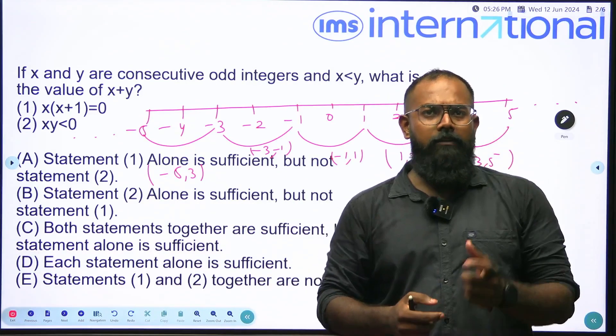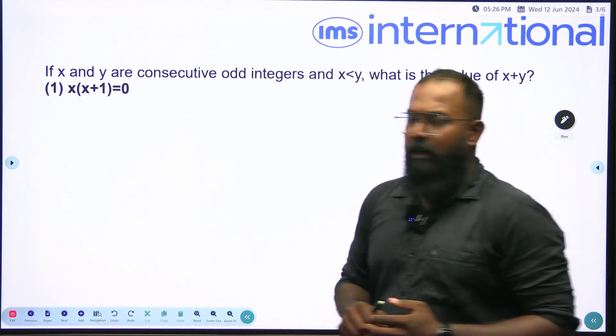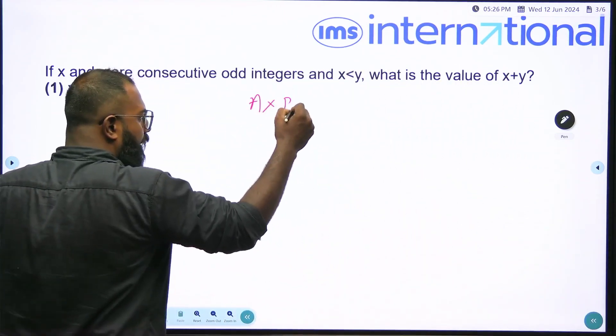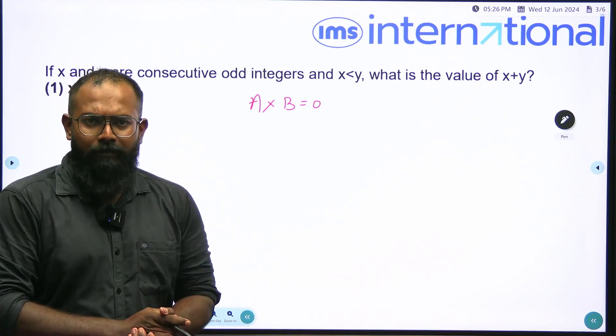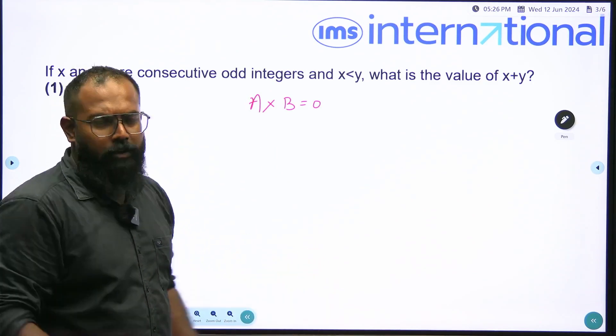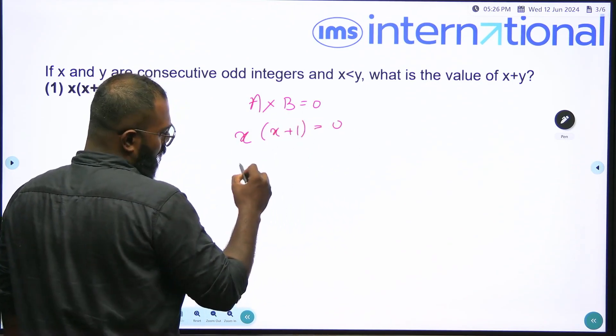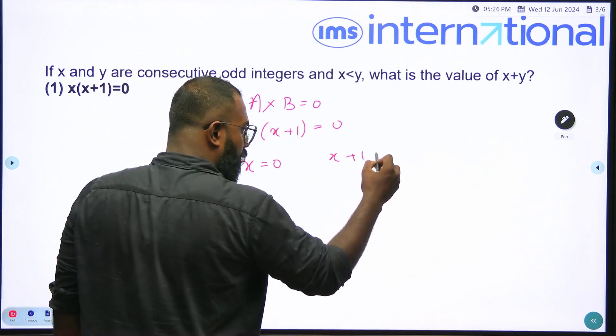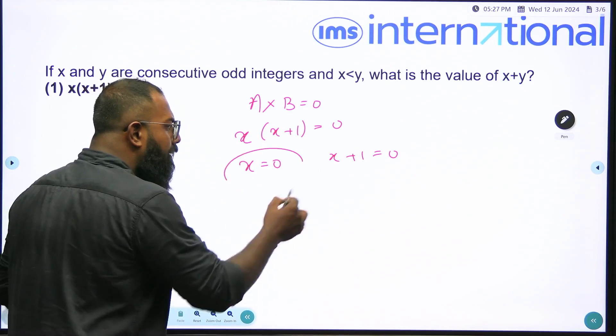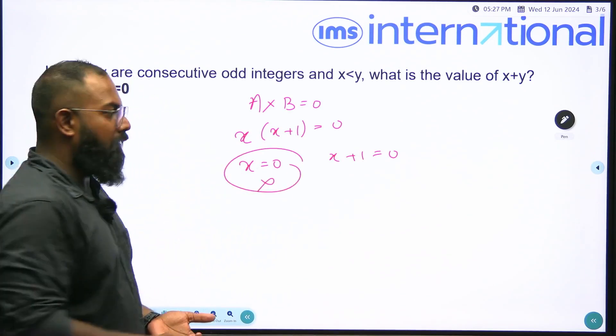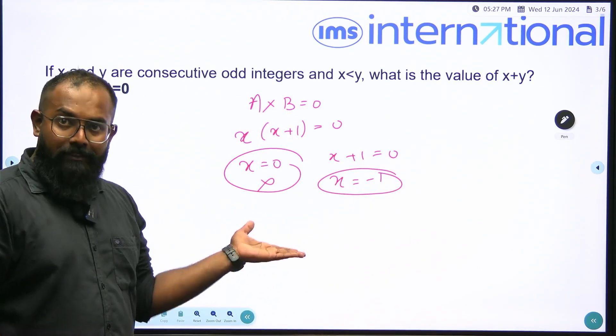Now let's go ahead with the first statement. It is given that the product of two numbers is equal to 0. Now if A times B is equal to 0, can I say that at least one is equal to 0? Either A is 0 or B is 0 or both are 0. That means if I say that X times X plus 1 is 0, either X is 0 or X plus 1 is 0. But it is given in the question that X is an odd integer. That means X cannot be 0 because 0 is an even integer. That means X is equal to minus 1.